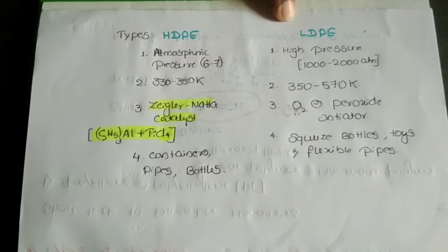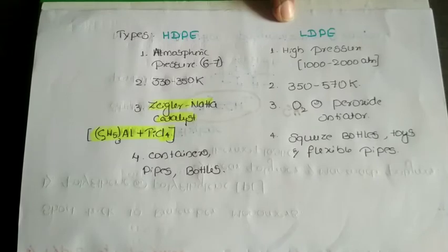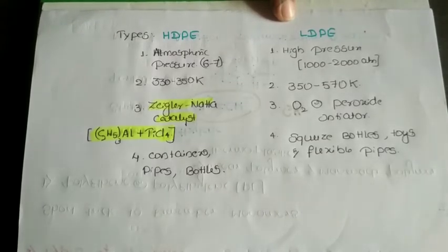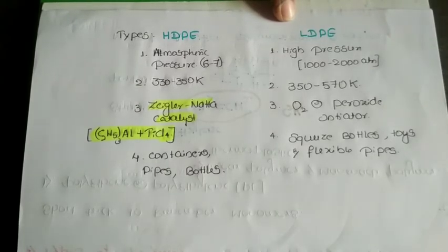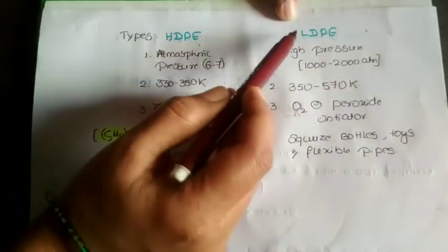Polyethylene is formed by the polymerization of n number of ethylene units. However, there are two types of polyethylene based on the method of polymerization — specifically the temperature, pressure, and catalyst used. These different conditions give different properties to the resulting polyethylene. Based on that, we have HDPE and LDPE.